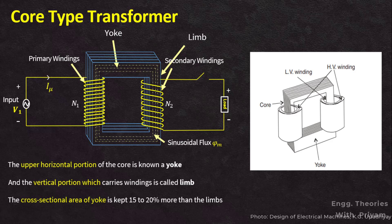Because of lamination and insulation, the net effective area is reduced due to the allowance which has to be made. It is found that in general, the reduction of core cross-sectional area due to the presence of paper or surface oxide is of the order of 10% approximately. In actual construction, primary and secondary windings are interleaved to reduce the leakage flux.